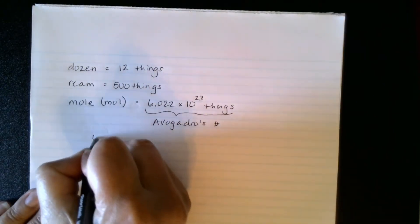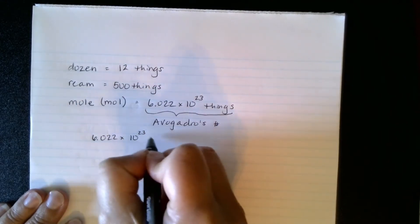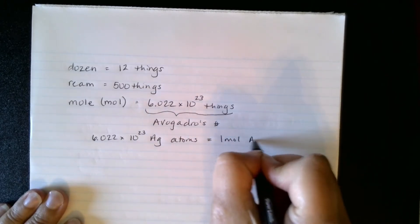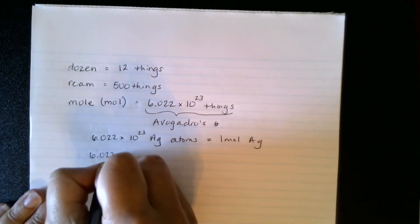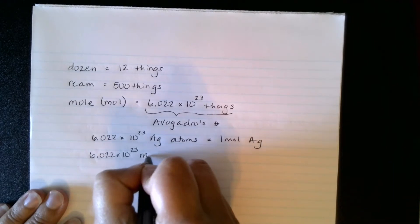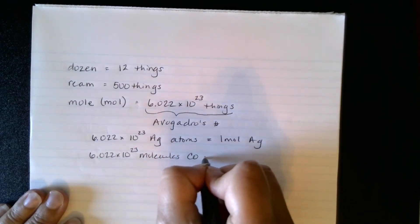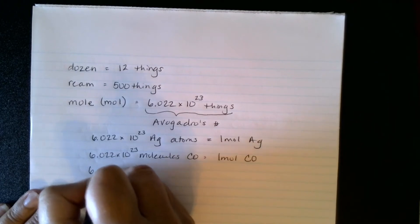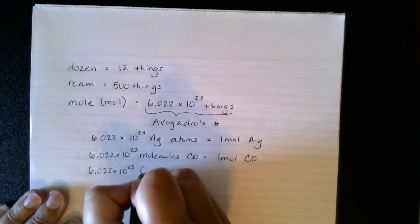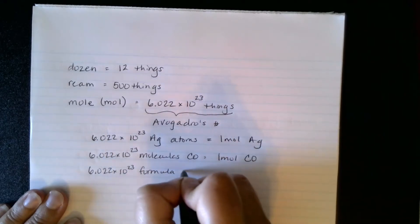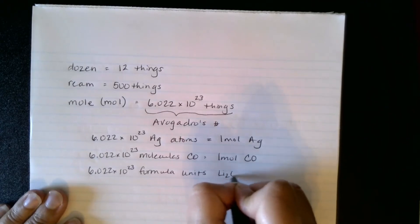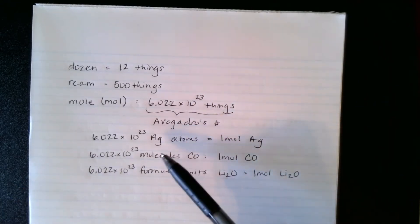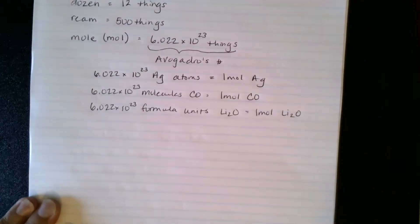So if I have 6.022 times 10 to the 23rd silver atoms, then I would have one mole of silver. I could have 6.022 times 10 to the 23rd molecules of a compound, and that would represent one mole of that compound. I could also have 6.022 times 10 to the 23rd formula units if I have an ionic compound. But it doesn't matter if we're talking about atoms, molecules, or formula units — all of those have the same number of things in one mole.